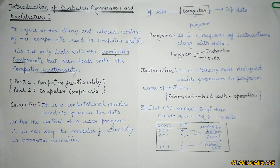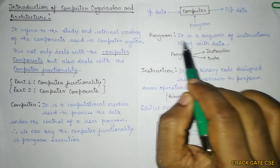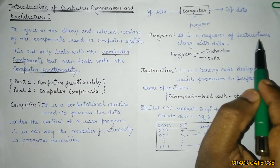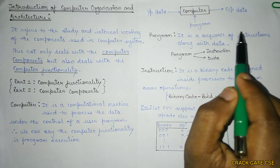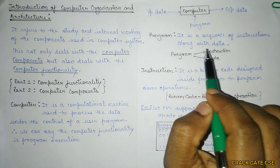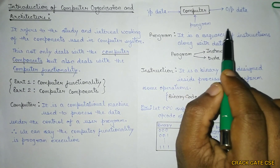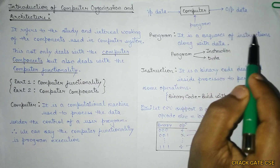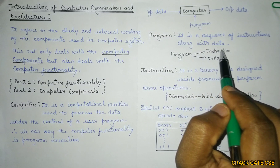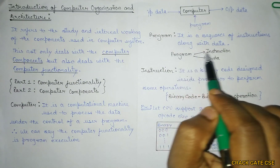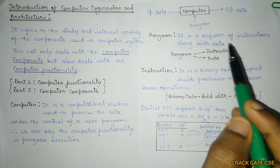Now, what is a program? A program is a sequence of instructions along with data. The sequence of instructions is designed by considering the data, because if there is no data there is no use for those instructions. So a program always consists of two things: instructions and data.